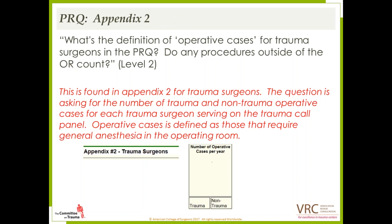A question about Appendix 2: what do we mean by operative cases? In Appendix 2, the far right columns ask for the number of operative cases per year — both trauma and non-trauma — for each trauma surgeon on your trauma call panel. Operative cases are defined as those requiring general anesthesia in the operating room. The non-trauma column will typically be a higher number than the trauma column if they're doing general surgery call.